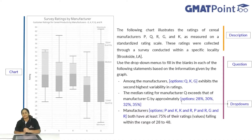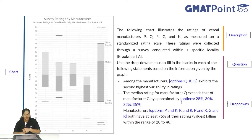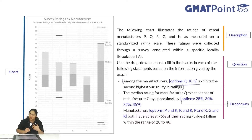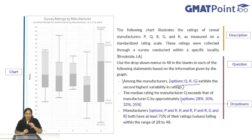Given any kind of graphics interpretation question, you will be given a graph or a chart, a description of the chart, and questions based on it. You will be given two or three lines and you have to complete the lines from the drop-down options given. You have to choose the options such that the given line becomes true — for example, which manufacturer exhibits the second highest variability.